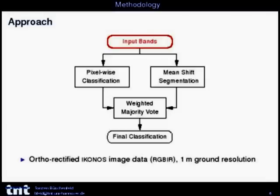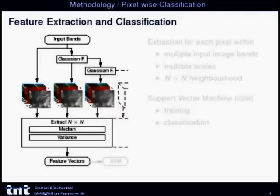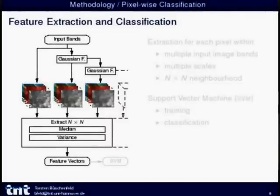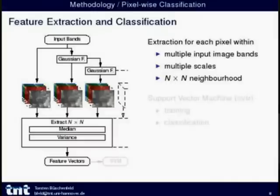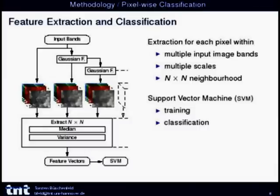We used auto-rectified IKONOS imagery with RGB and infrared channels at one-meter ground resolution as input, though the specific data type is not critical. The pixel-wise classification follows a typical machine learning scheme: input image bands are processed at multiple scales using a cascade of Gaussian filters. Features — here the median and variance within an N-by-N neighborhood per pixel — are extracted and composed into feature vectors sent to a support vector machine, either for training with a training set or for classification of unknown data.